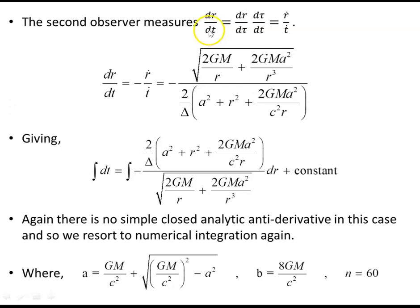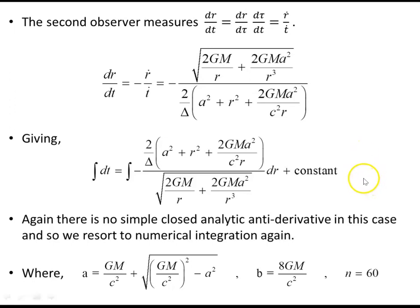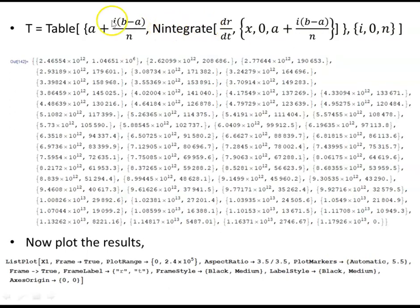The second observer measures dr/dt = (dr/d tau) / (dt/d tau) = r dot / t dot. From our earlier expressions, dr/dt is minus r dot over t dot (negative because inward). When we try to find a symbolic anti-derivative by separating differentials, no analytic solution can be found, so we again resort to numerical integration — setting the lower limit as the outer event horizon and the upper limit as the starting point 8GM/c², with n = 60 intervals.